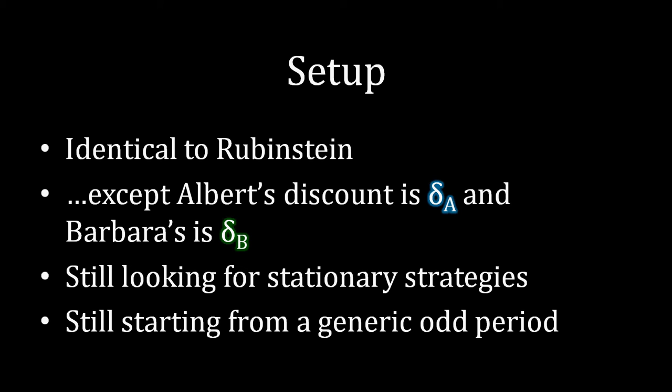As we're solving this game, we're going to adopt the same strategy as before. We're going to look for stationary strategies — strategies that don't change from odd period to odd period or even period to even period — and we'll discuss later why those are the only solutions to the game. We also don't have a fixed end to the game because it is an infinite horizon game, so we're going to start from a generic odd period and work our way back, just like we did when solving Rubinstein.